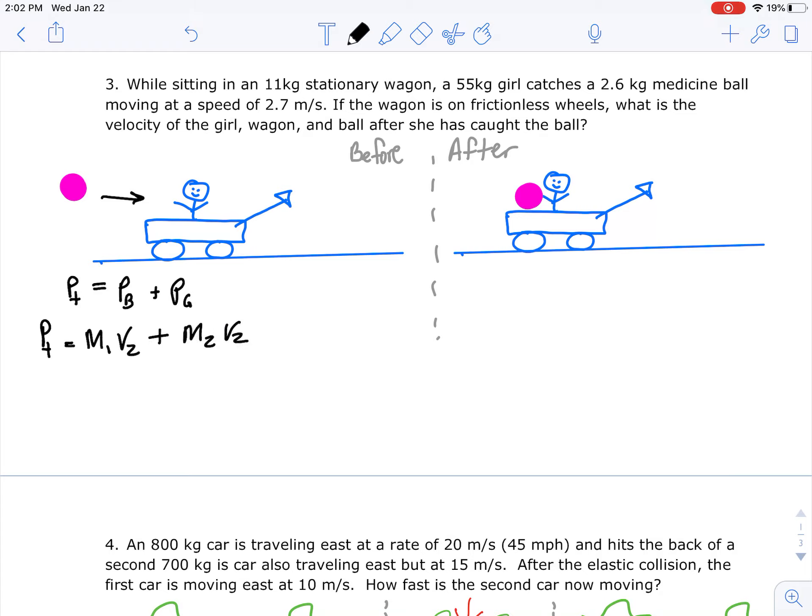So the mass of the ball is 2.6 kilograms. You can see that in the paragraph above and the velocity is 2.7 meters per second. The girl and the wagon are sitting still, so that momentum is zero. So we get 2.6 times 2.7 equals 7.02 kilogram meters per second.